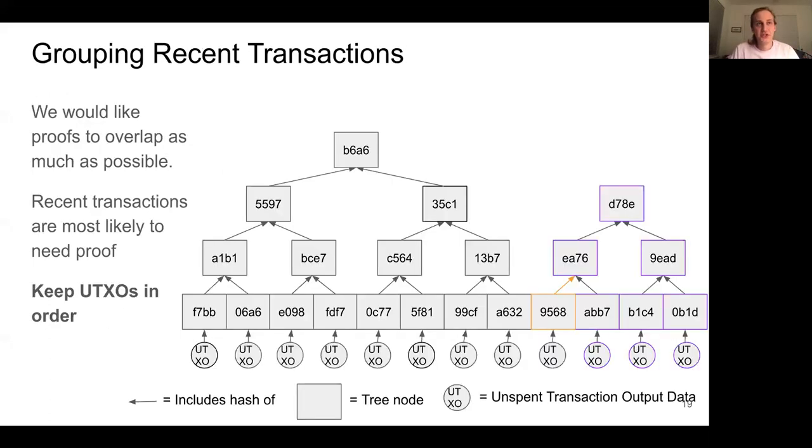So how can we take advantage of the fact that most transactions are spent quickly? The biggest takeaway from this talk is that it is good to keep transactions in order as much as possible, in the order in which they appear in the blockchain. As we see here, when all of the transactions are concentrated in one part of the tree that we're proving, we have to provide less data. In fact, in this example, we only have to provide a single hash, the hash for 9568. And this is because the branches overlap so much to the point where we can reconstruct the data in each branch just from the UTXOs at the bottom of the branches and this one additional hash.